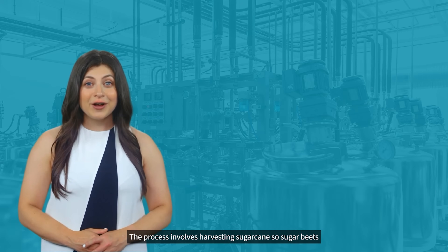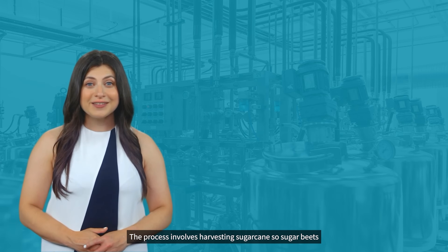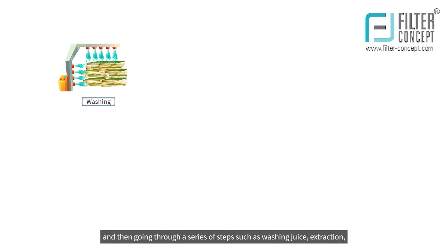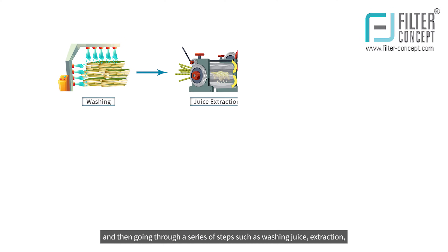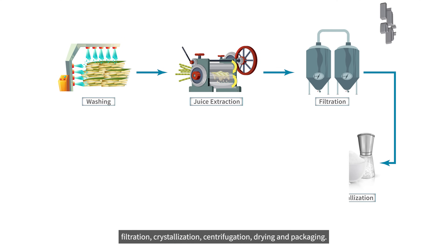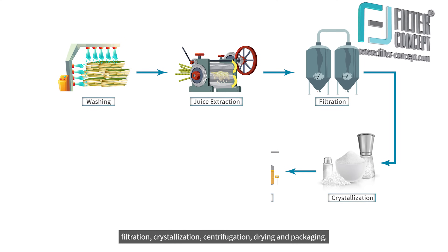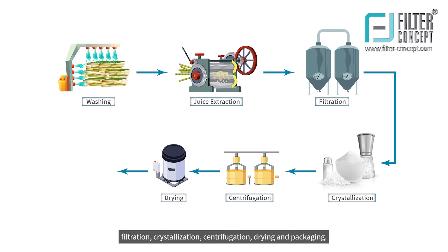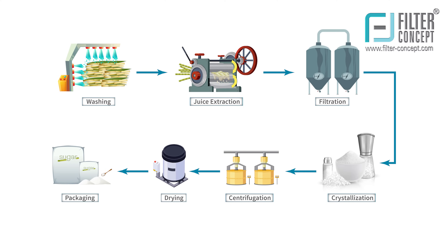The process involves harvesting sugar canes or sugar beets, and then going through a series of steps such as washing, juice extraction, filtration, crystallization, centrifugation, drying, and packaging.